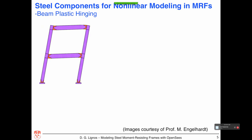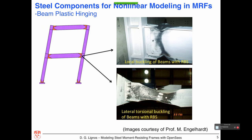Regarding beam plastic hinging: past yielding, we deal with issues related to local buckling. Here you see an example of a steel beam with a reduced beam section. After a certain number of inelastic cycles, the flanges as well as the web will buckle. These issues must be taken into account when building a nonlinear model for a steel moment frame. Another problem is lateral-torsional buckling of beams with RBS, which must also be reflected in the model.